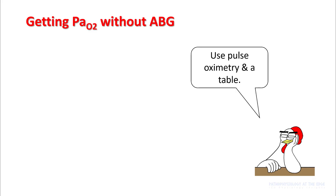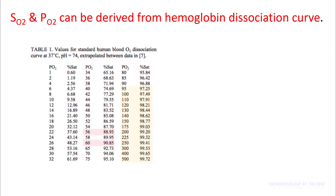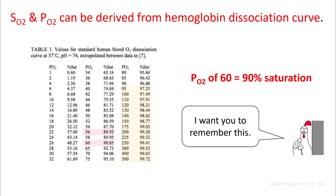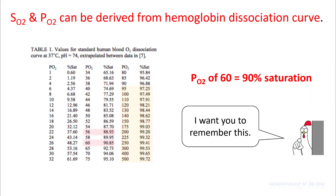To get a PO2 without an ABG, use pulse oximetry and a table which is derived from your hemoglobin dissociation curve. I just want you to remember one number: PO2 of 60 equals 90% SaO2, because you are aiming for your patient's SaO2 to be more than 90%. So you want your PO2 to be more than 60.